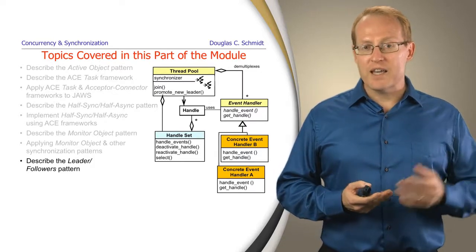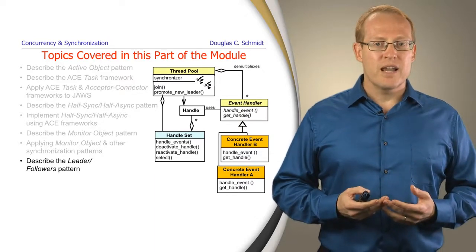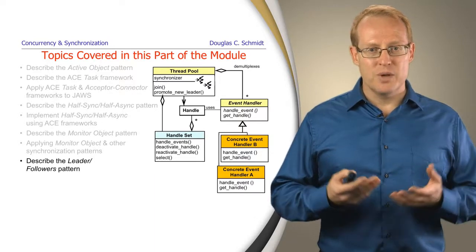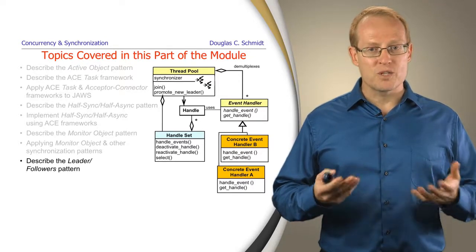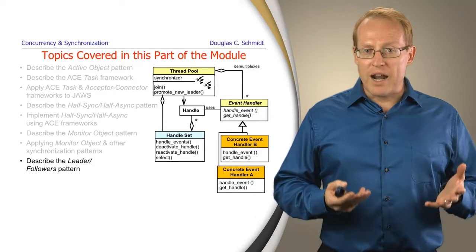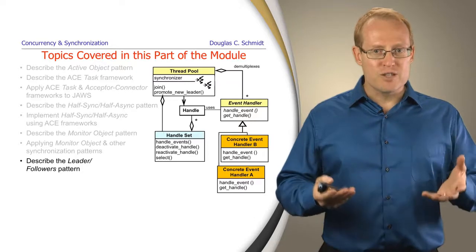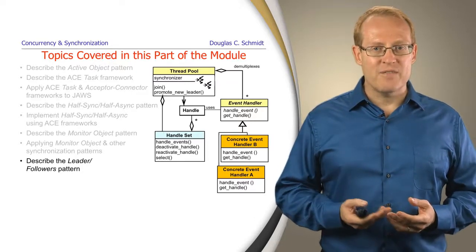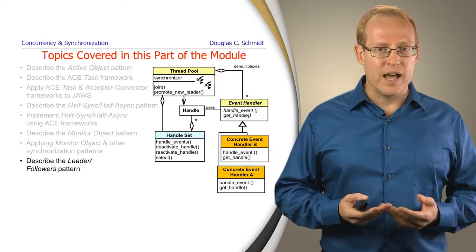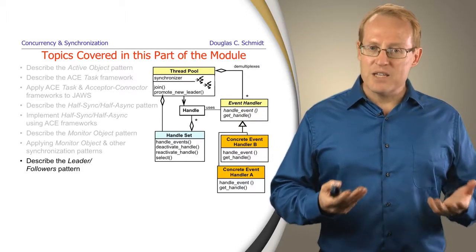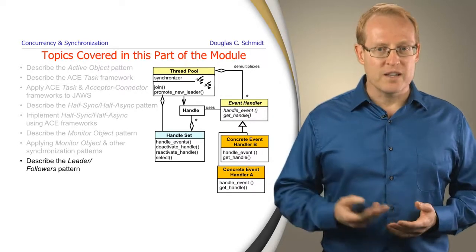We then described the half-sync/half-async pattern that combines reactor and active object, and illustrated a number of ACE frameworks that can be combined to implement this pattern and apply it in the context of JAWS to provide a more scalable solution. We then described the monitor object pattern, which was used to serialize access to a synchronized request queue in our half-sync/half-async solution, and also illustrated ways in which various synchronization patterns can be applied to monitor object and the ACE message queue to make it more pluggable, more scalable, and easier to use in different contexts.